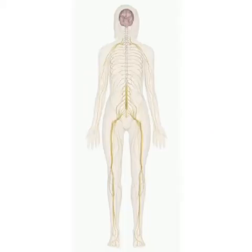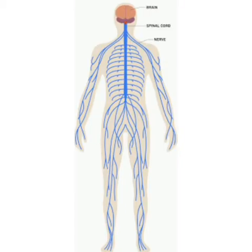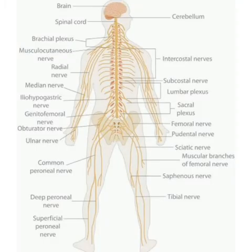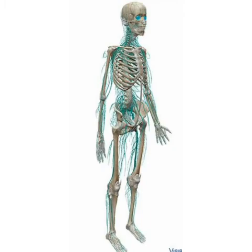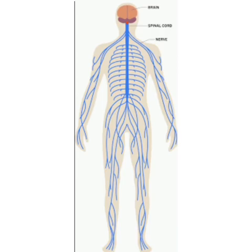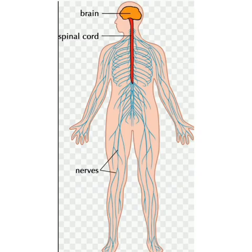What are nerves? These are the thread-like structures starting from the spinal cord and ending in body parts. They are made up of nerve cells, or neurons. Nerves form a network inside our body.